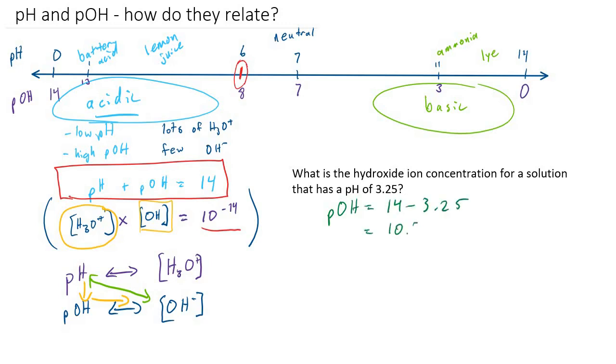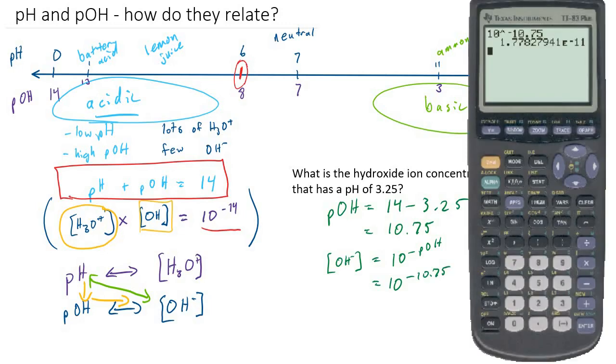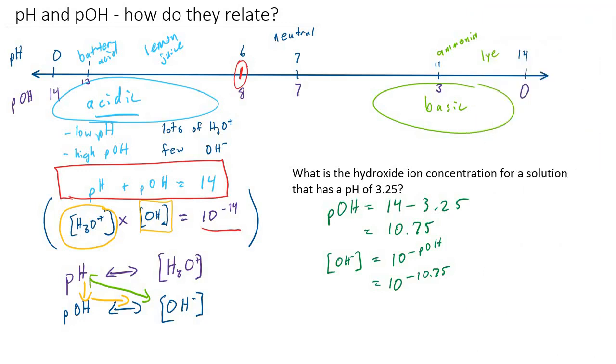So that is 10.75 for our pOH. And now I have a formula that can calculate hydroxide ion concentration if I know the pOH, and that is 10 to the negative pOH, which is equal to 10 to the negative 10.75. So I have 1.778, and let's double check on our significant digits there. And that was times 10 to the negative 11.